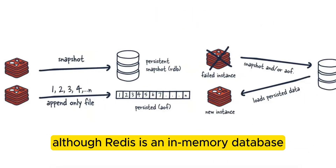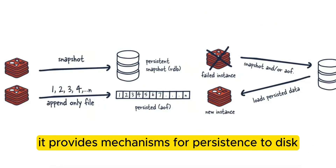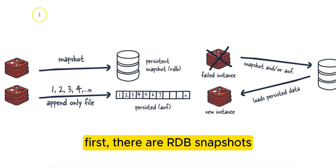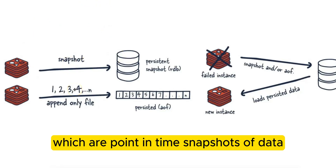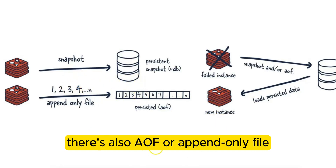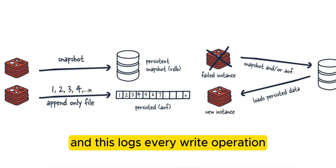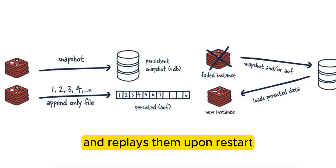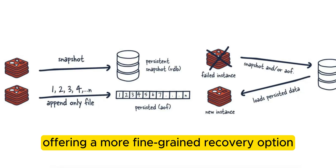Although Redis is an in-memory database, it provides mechanisms for persistence to disk. First, there are RDB snapshots, which are point-in-time snapshots of data that can be saved periodically. There is also AOF, or append-only file, which logs every write operation and replays them upon restart, offering a more fine-grained recovery option.